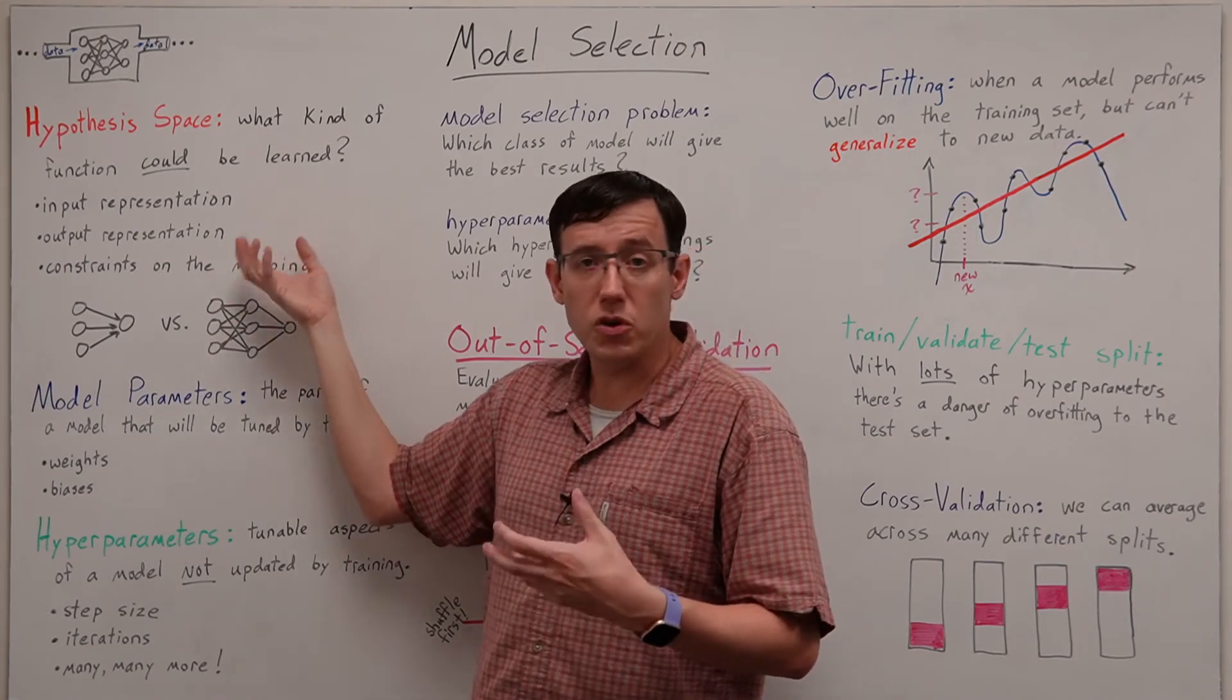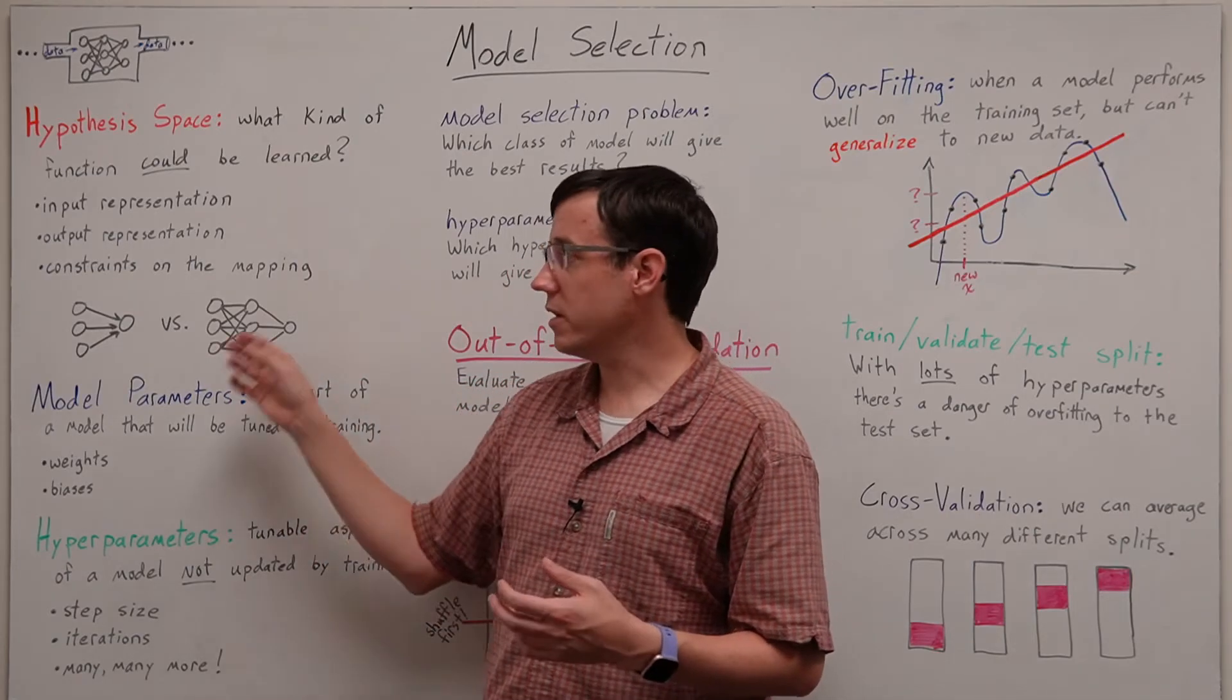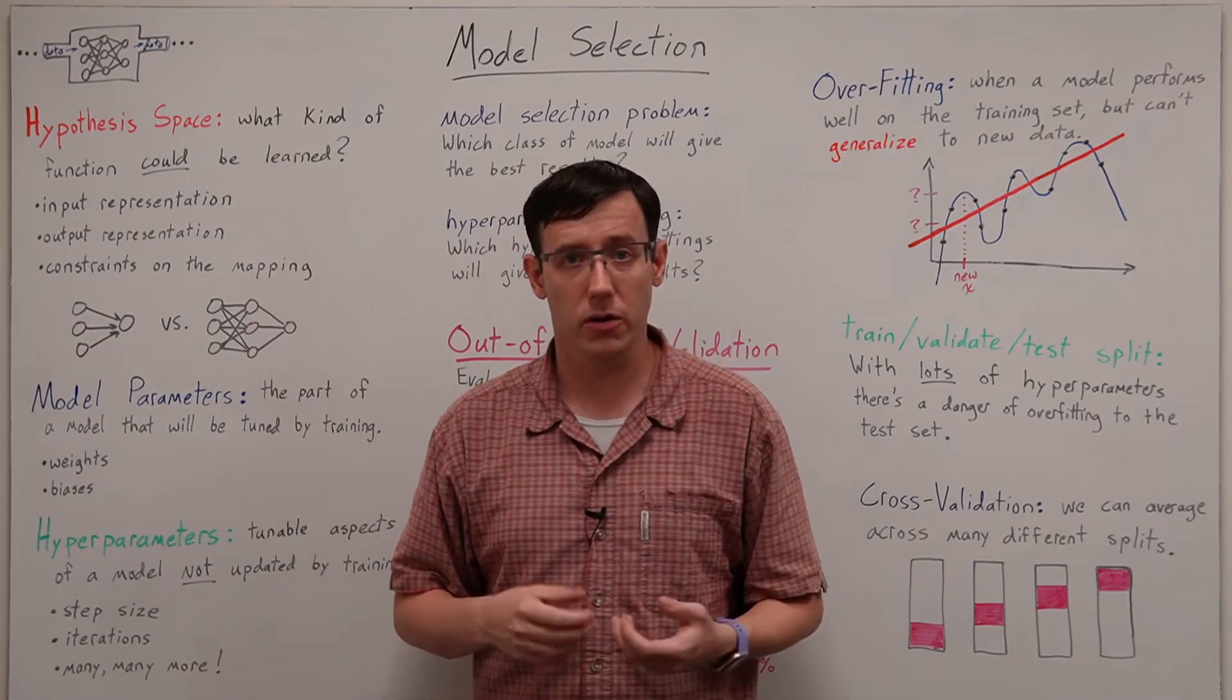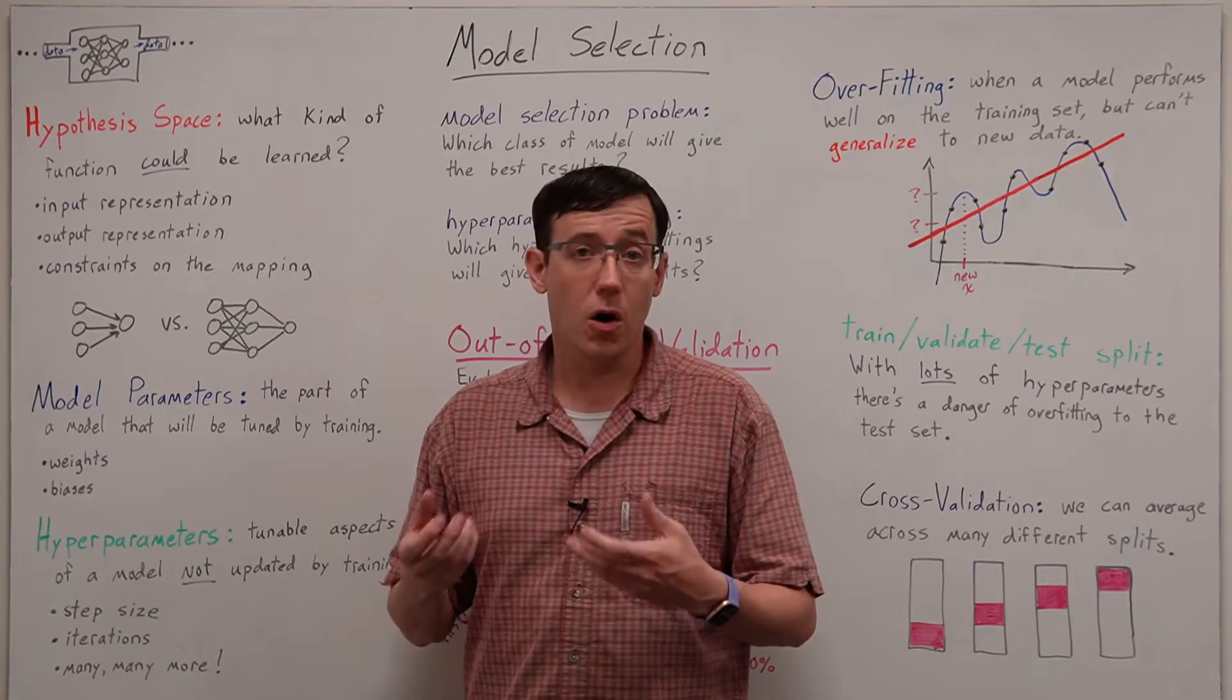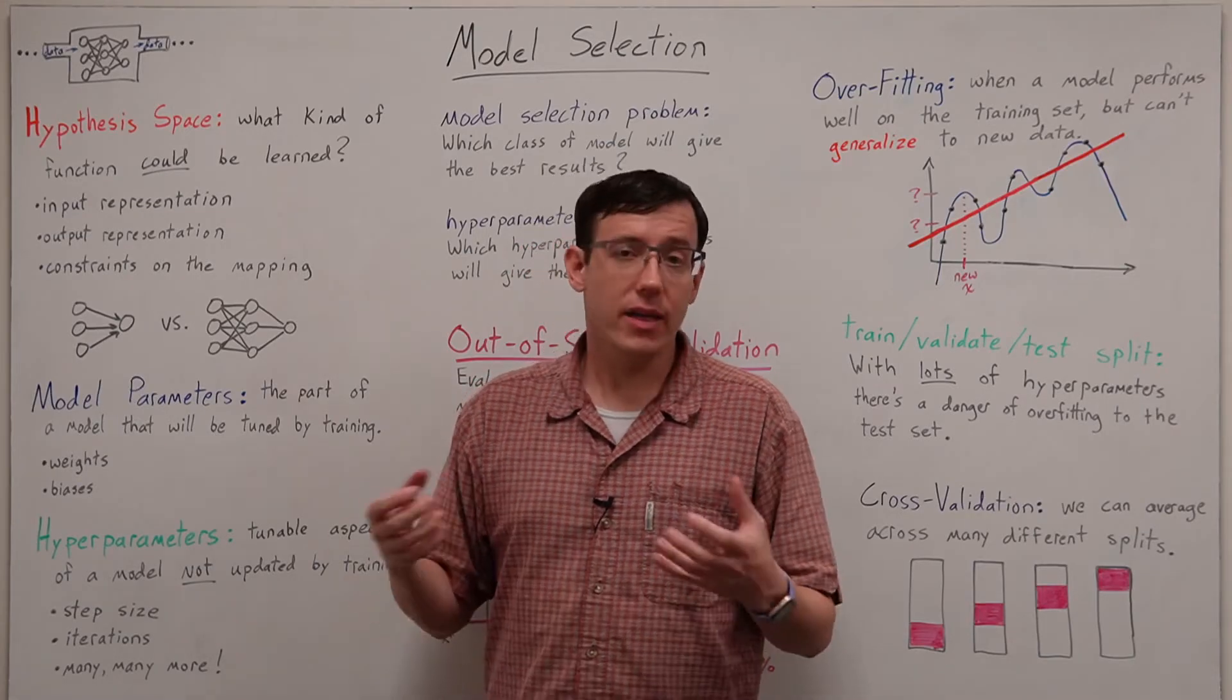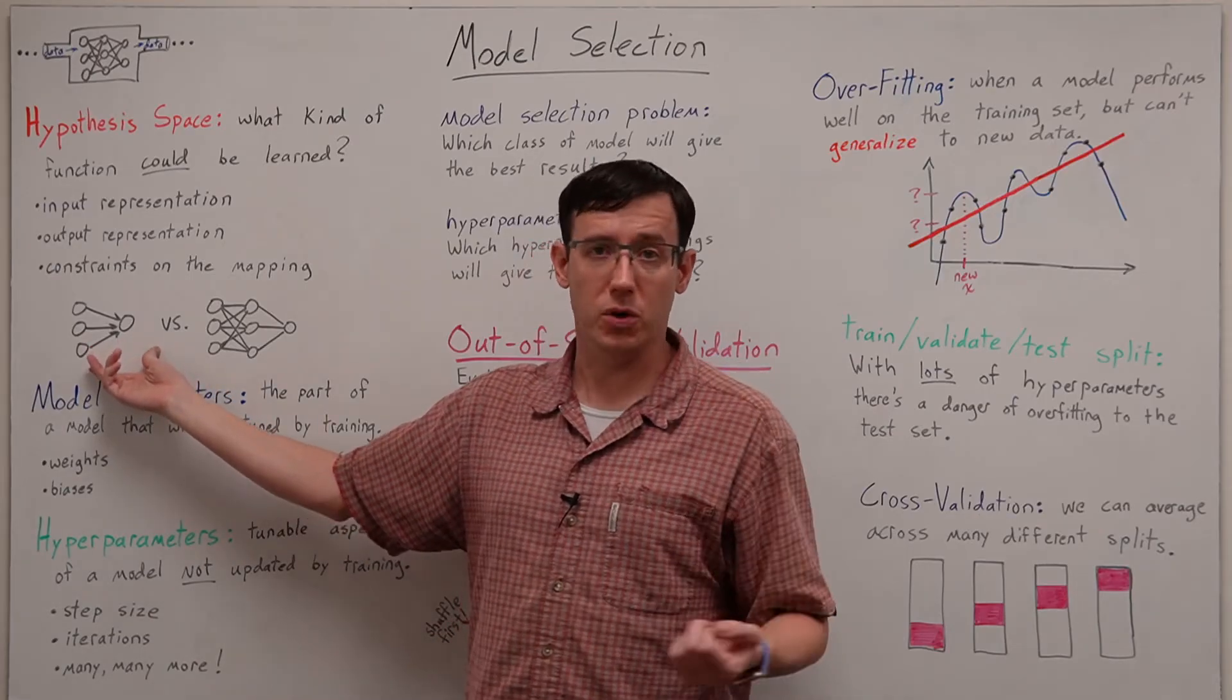But different machine learning algorithms and models will also impose constraints on what type of mapping between the inputs and the outputs might be learned. For example, when we looked at single neuron models, the sigmoid classifier always identified a linear decision boundary. And that's a very rigid constraint on the sort of function that could map the inputs to the outputs.